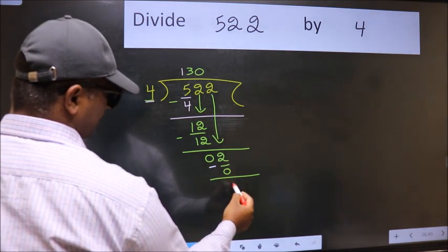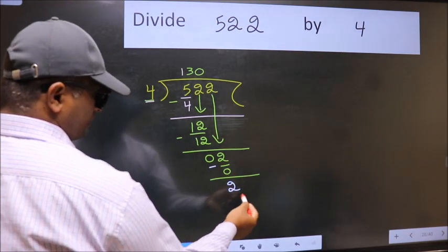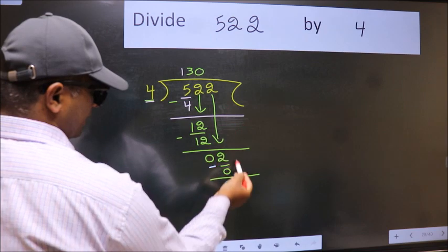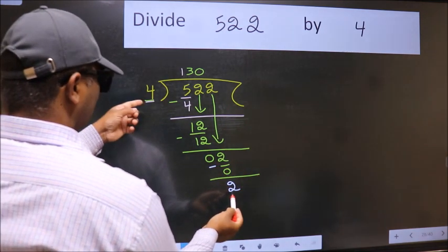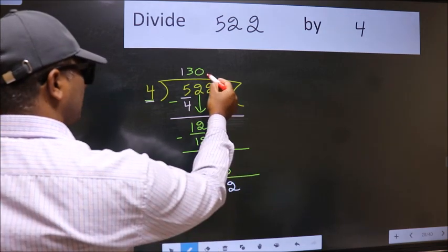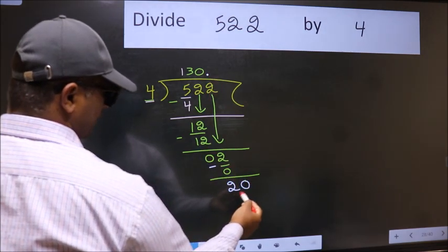Now we subtract. We get 2. Over here, we did not bring any number down, and 2 is smaller than 4. So now we can put a dot and take 0. So 20.